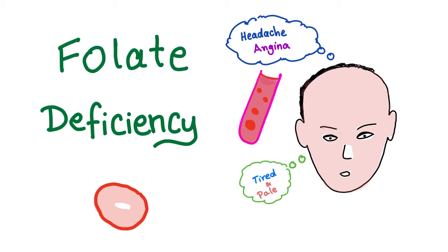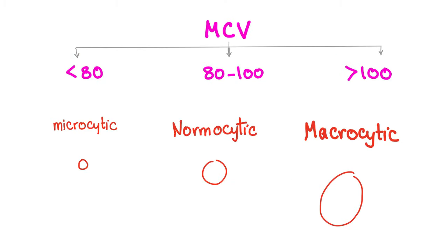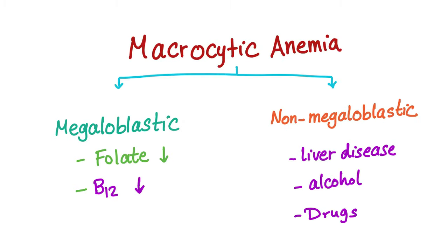Symptoms of anemia are the same: tired and pale, sometimes angina, sometimes a murmur, also headache and exercise intolerance. Depending on the MCV, we have microcytic, normocytic, or macrocytic anemia. In macrocytic anemia, the mean corpuscular volume is more than 100. There are two types of macrocytic anemia: megaloblastic and non-megaloblastic.